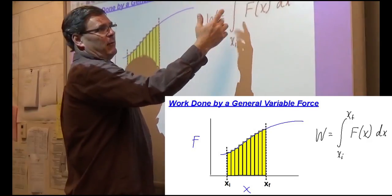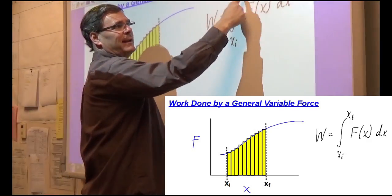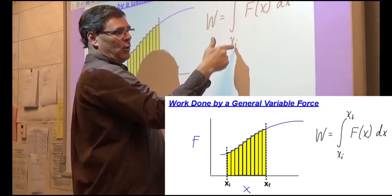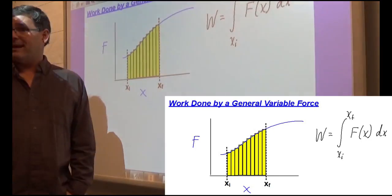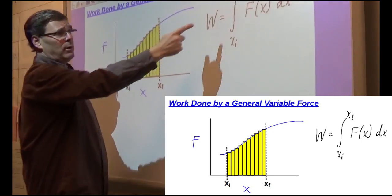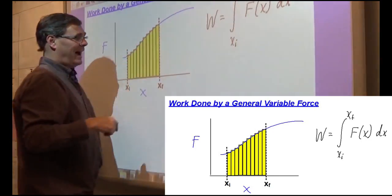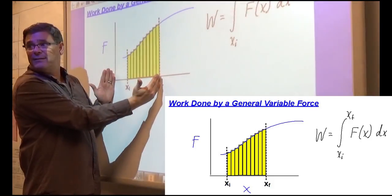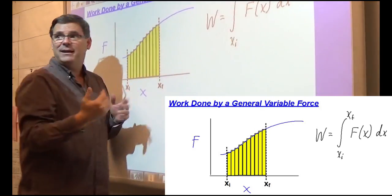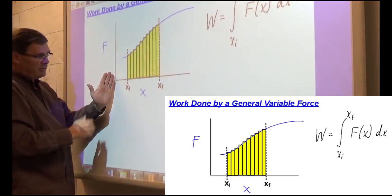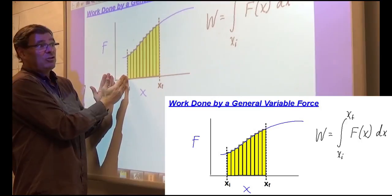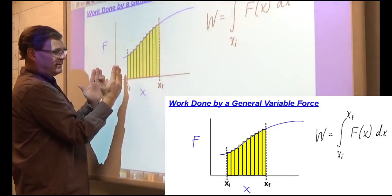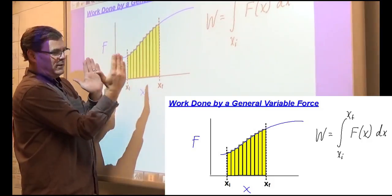When we integrate and plug in our limits of integration, we plug in x-final and then subtract what we get when we plug in x-initial. When I plug in x-final, I'm getting the area under the curve from 0 to x-final. When I plug in x-initial, I'm getting the area under the curve from 0 to x-initial. So the area between those two points is this area minus this area, which leaves me with the area between them. That's the answer.